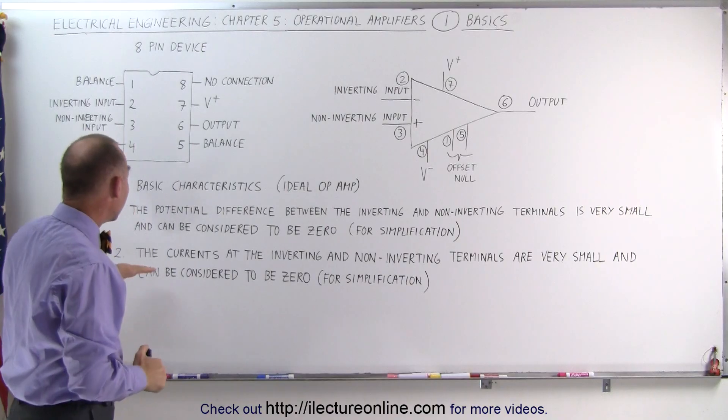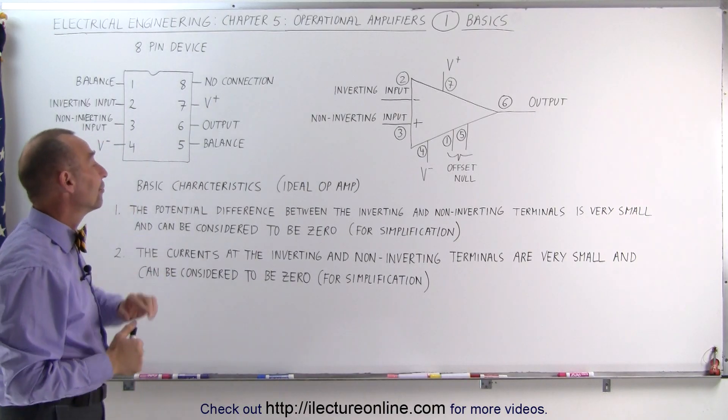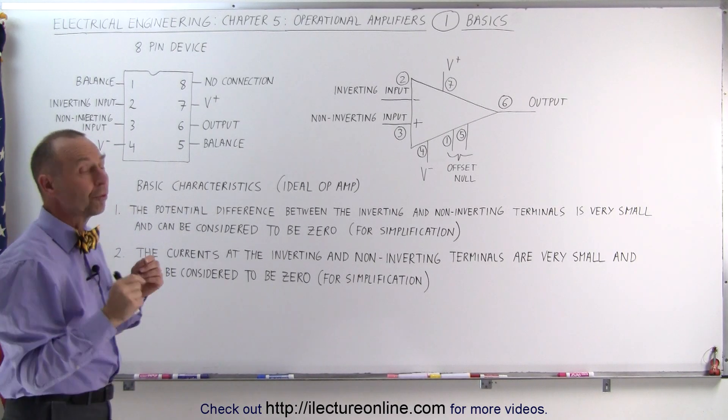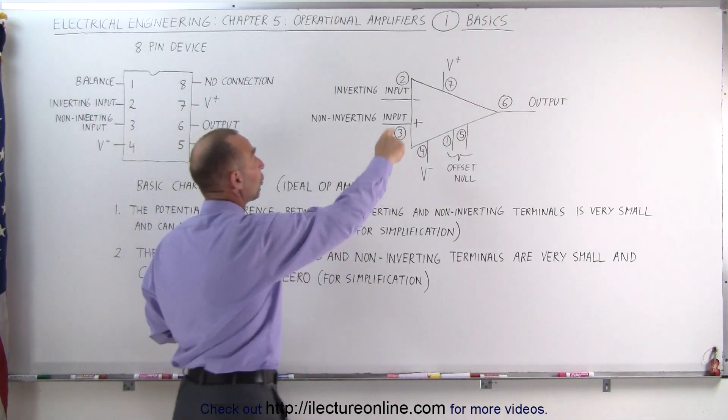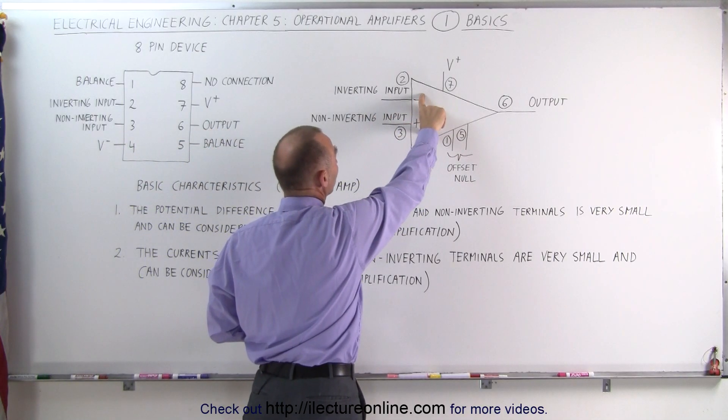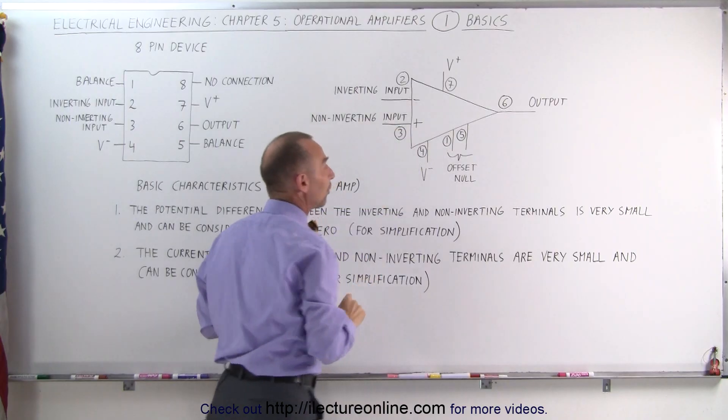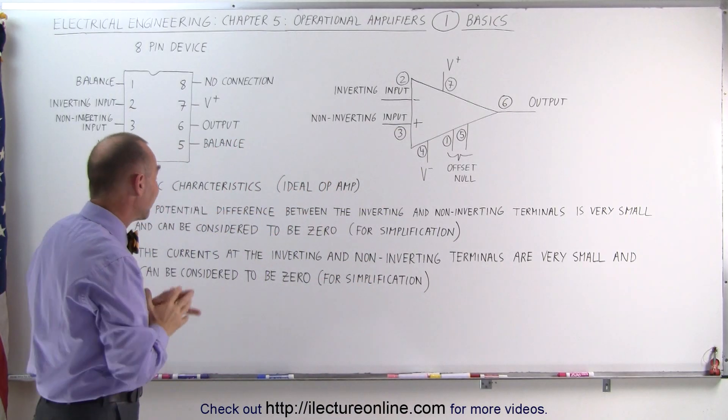The next thing we're going to talk about is the currents at the inverting and non-inverting terminals are also very small. The currents going in and out of these two terminals right here, they're very small, and so therefore we can also consider them to be zero.